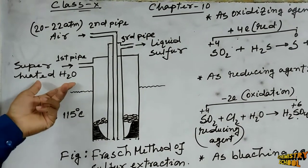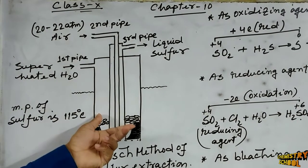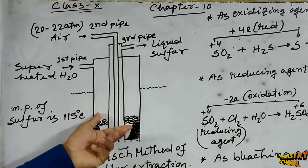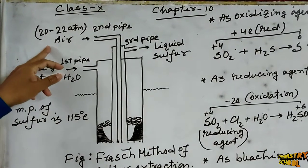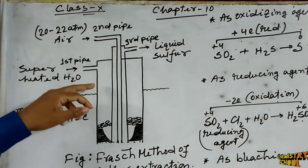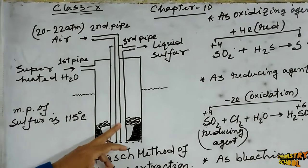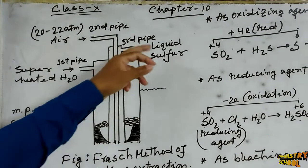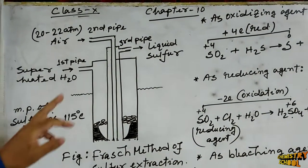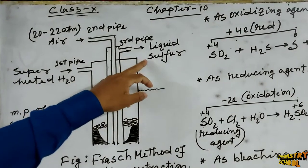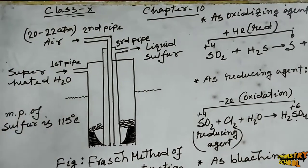Due to the superheated water, the sulphur in the mine becomes molten in a very short time. Due to the high pressure of the air, the molten sulphur comes out through the third pipe. By this process, liquid sulphur is extracted.